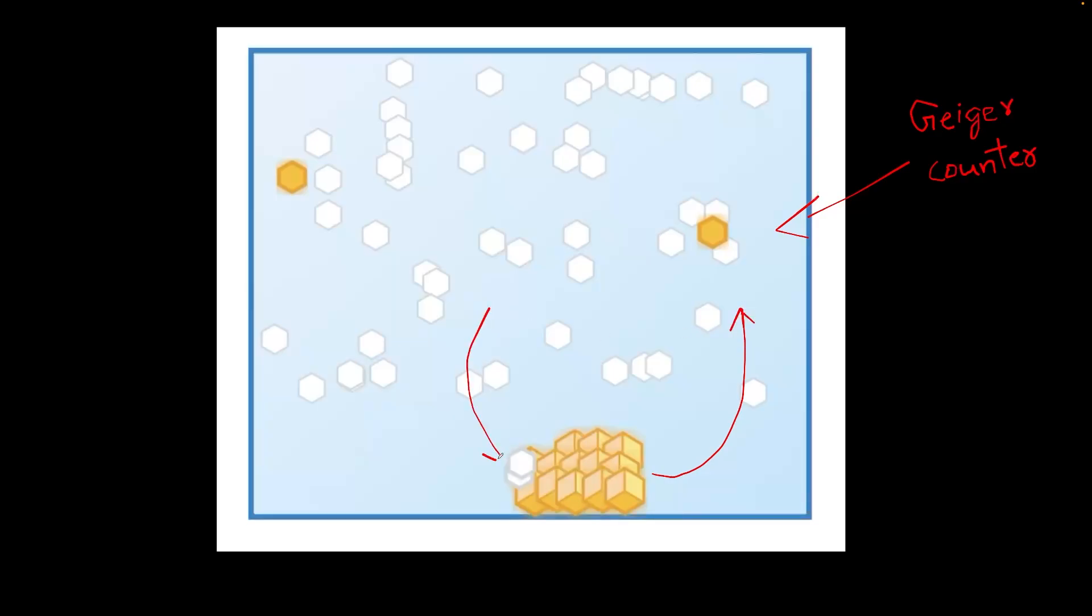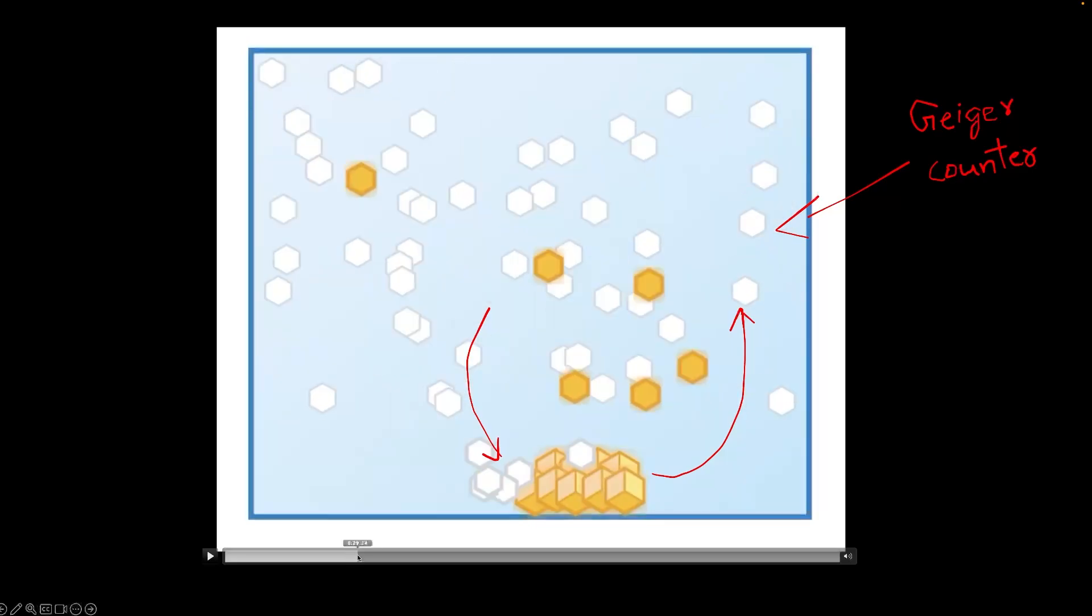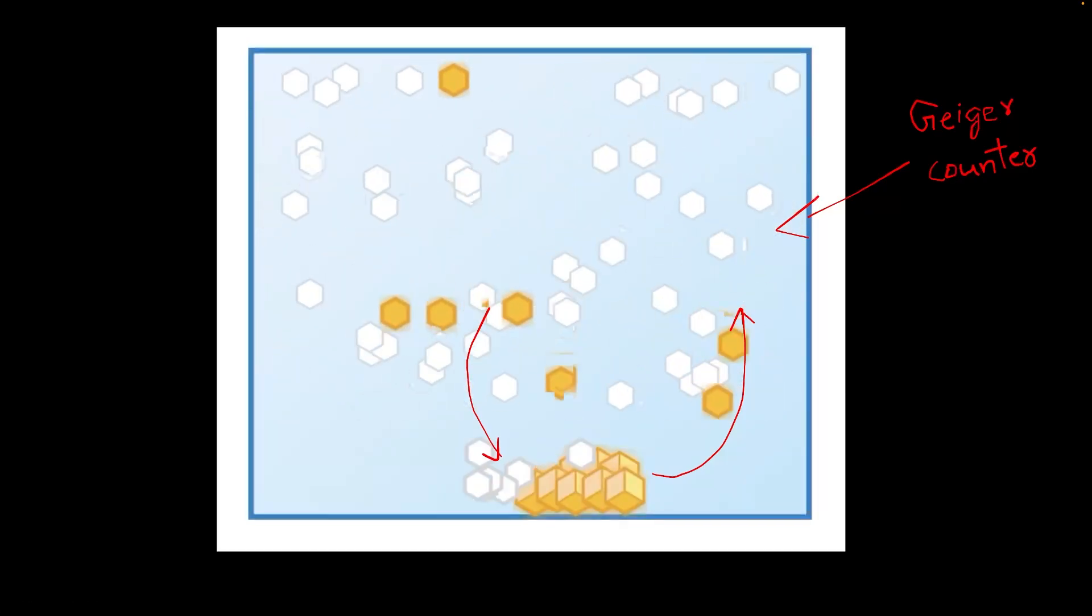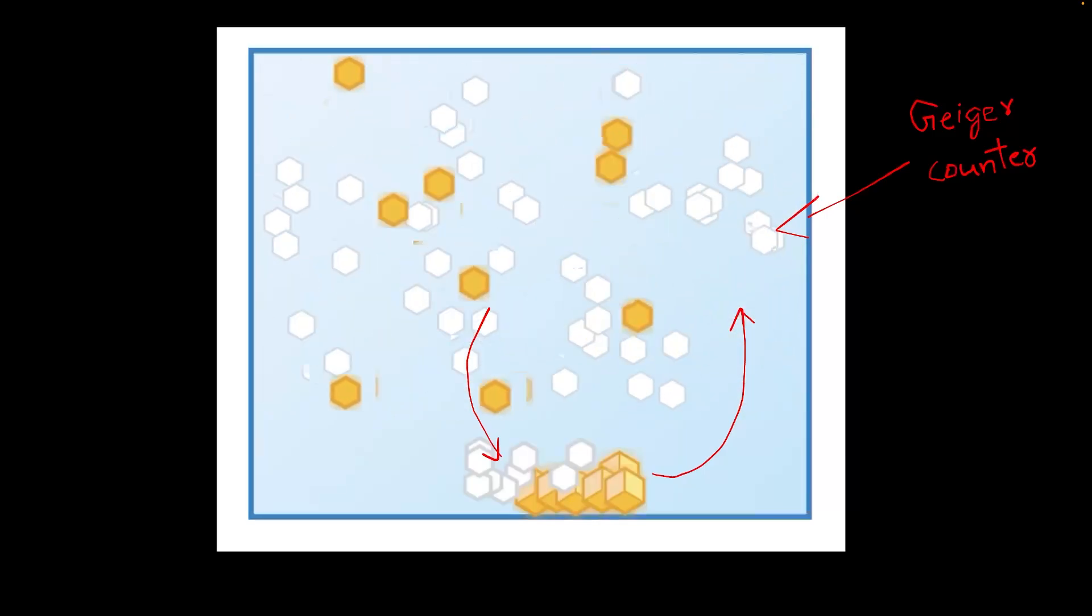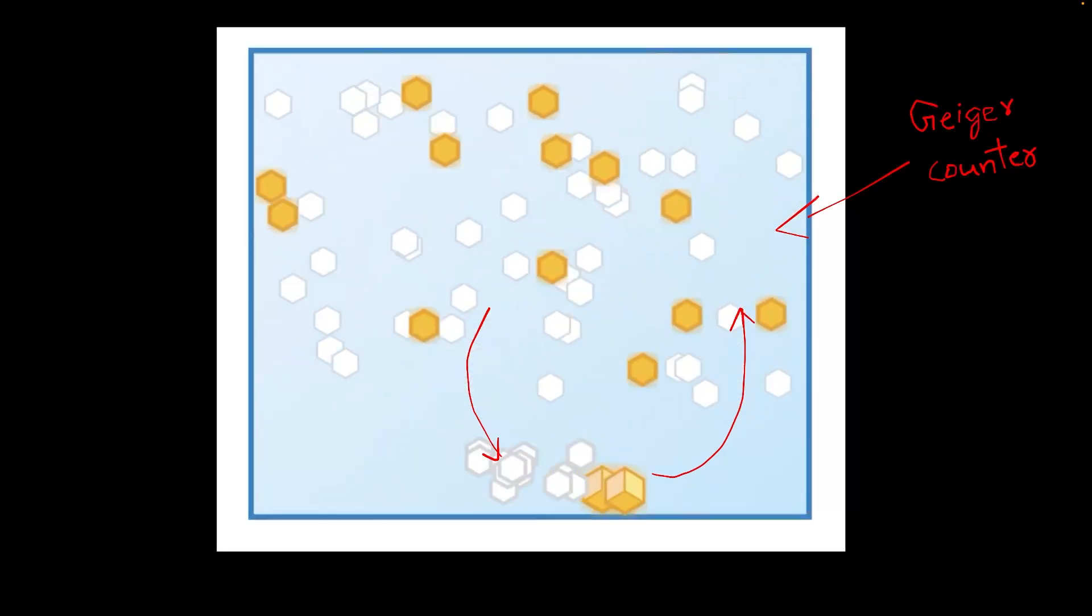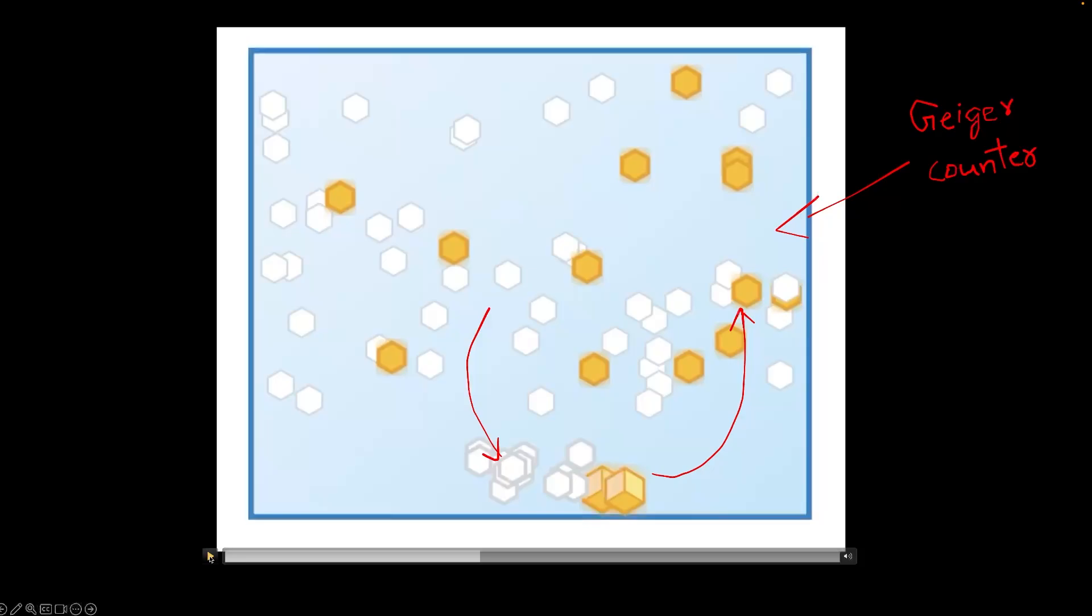So since before we didn't have anything, and now we are able to detect something, we know that some of this have actually gone here. And some of these have actually come down here. And this is how we can imagine the way it looks. As time passes, more radioactive particles go into solution and more of the non-radioactive particles come into crystal form. But after a particular point, you reach an equilibrium beyond which nothing much changes. And the two processes keep going on in the same way.